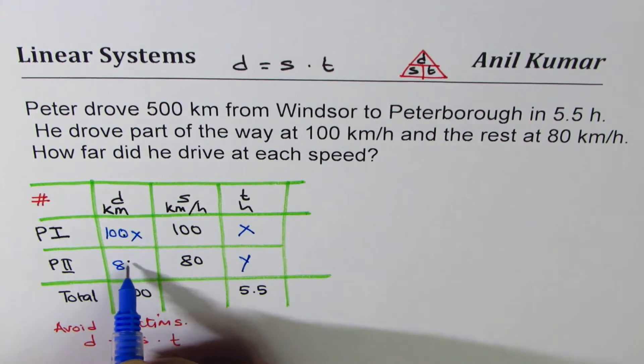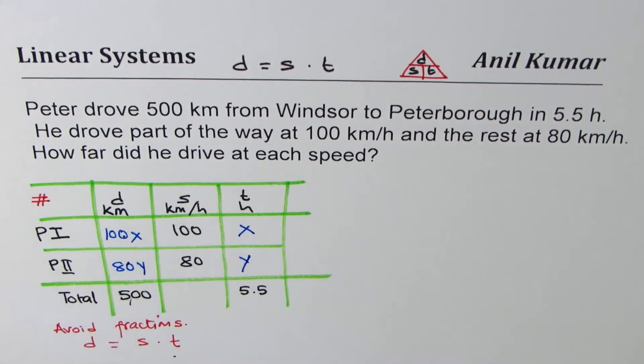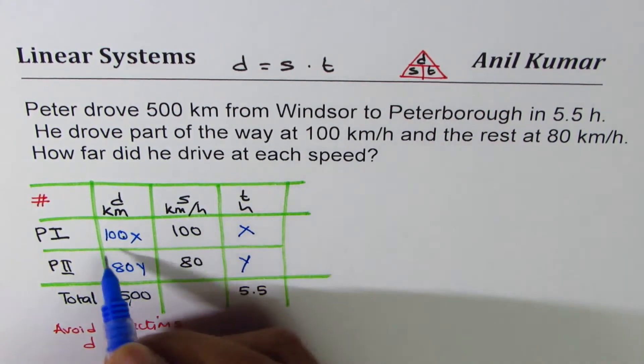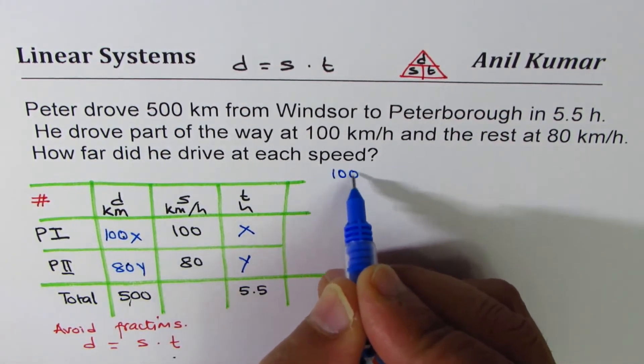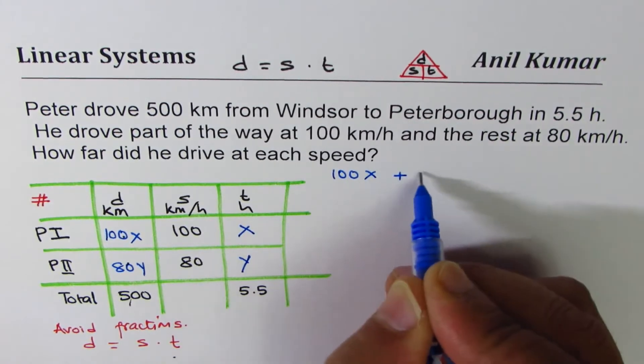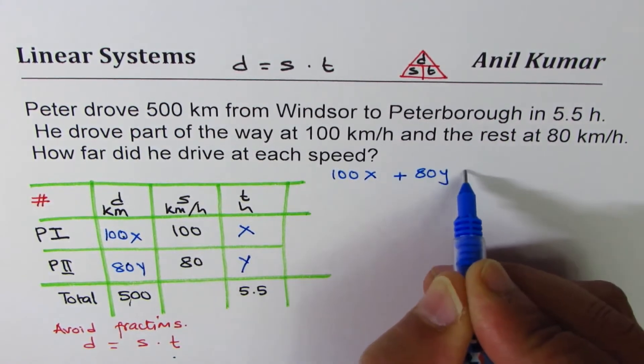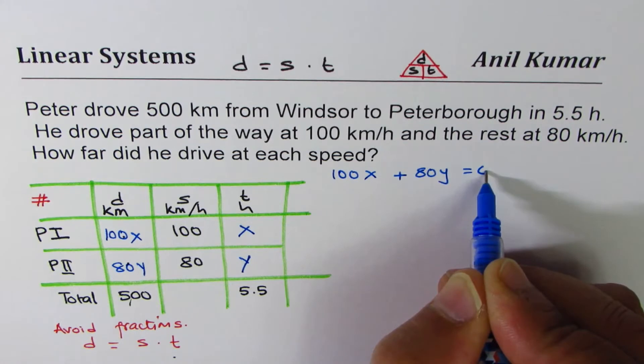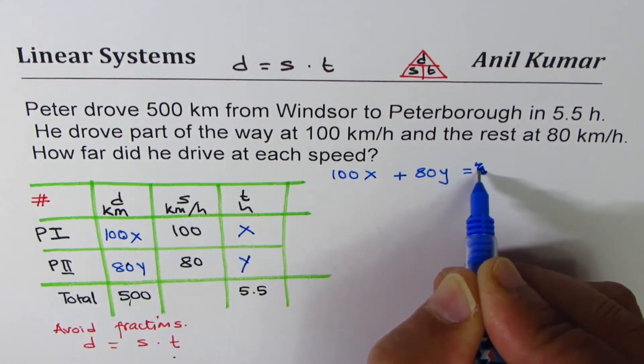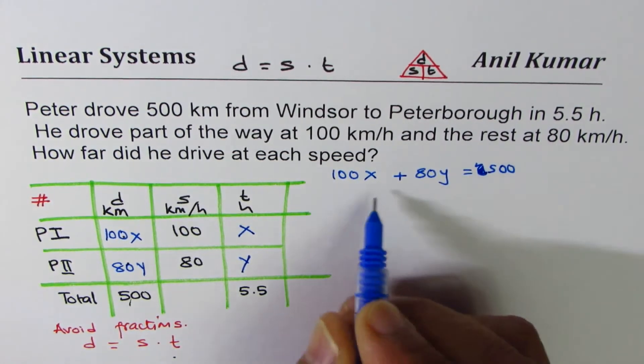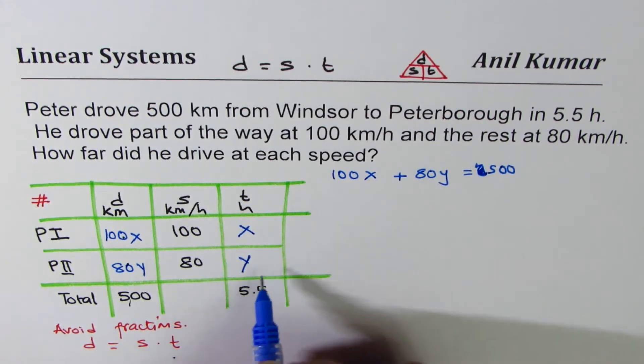That gives you two equations. The equations for us are: 100x plus 80y equals 500. That's one equation. The other one is x plus y equals 5.5.